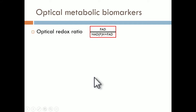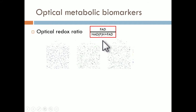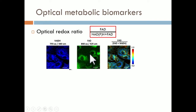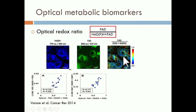In my group, to start addressing this question, we have developed a multi-parametric approach with different optical metabolic readouts. One of them is the optical redox ratio, which is based on the intensity of the two-photon excited fluorescence of FAD and NADH. For every NADH and FAD pixel we collect, we can reconstruct this intensity ratio and produce redox-coded images.